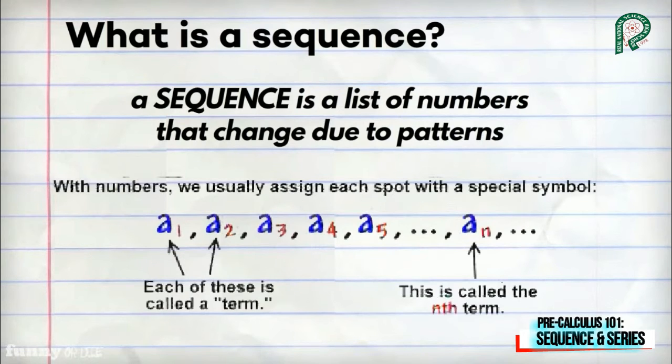With numbers, we usually assign each spot with a special symbol: a sub 1, a sub 2, a sub 3, and so on up to any nth term. a sub 1, a sub 2, and a sub 3 are called the succession of terms. So each of them is called a term.